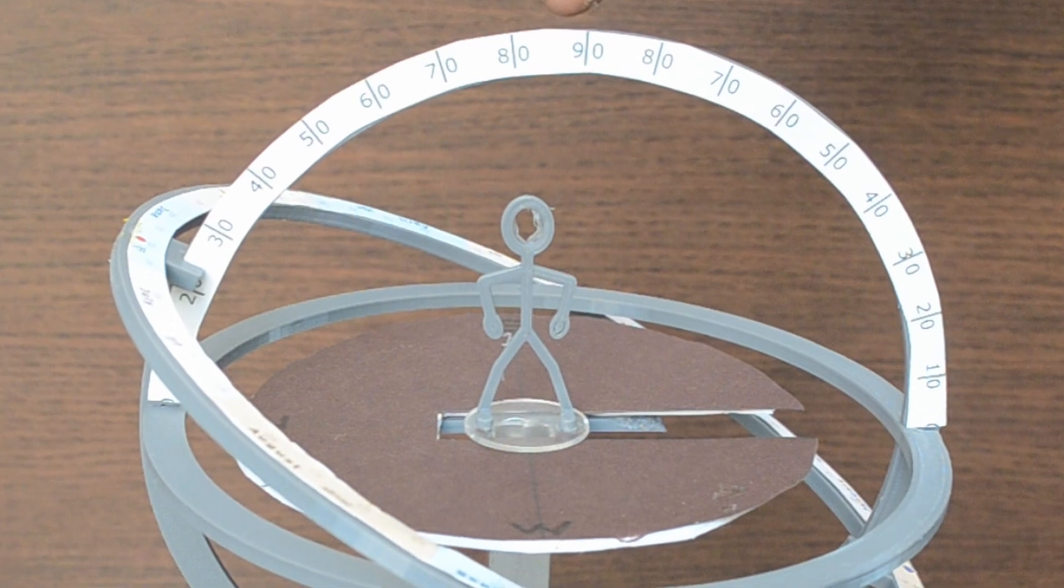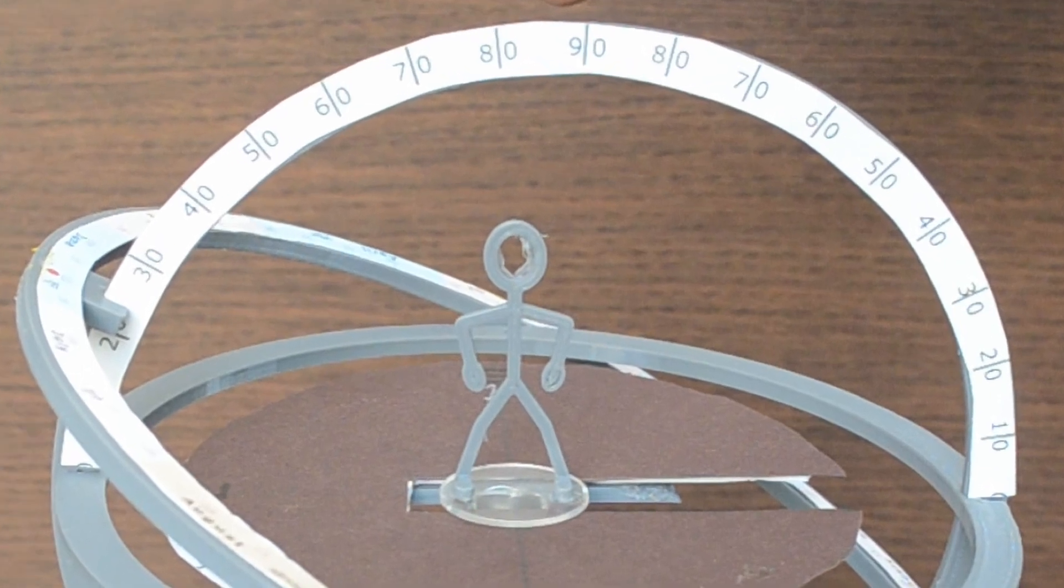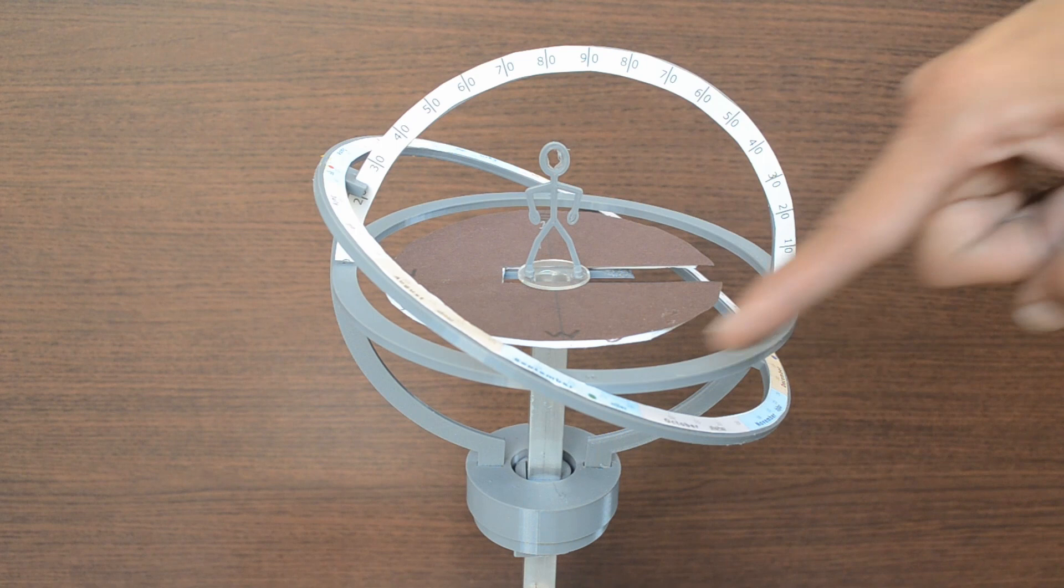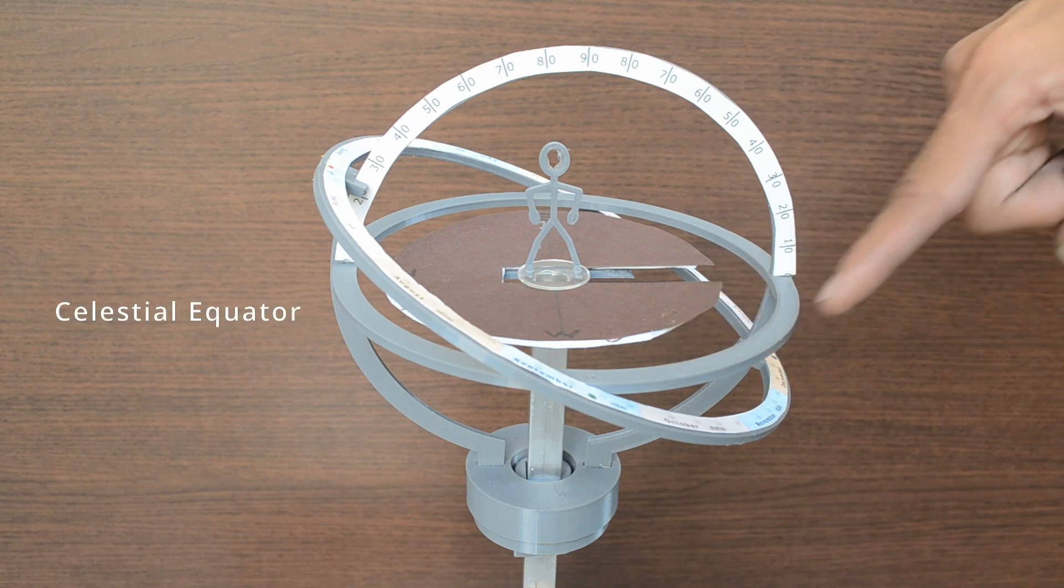Ring has degrees marked on the upper part. This is the celestial equator.